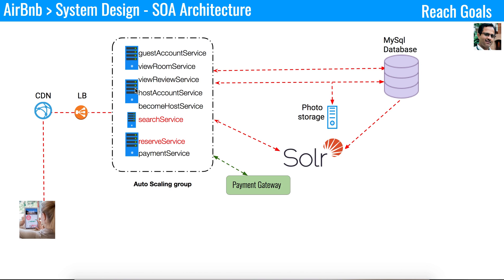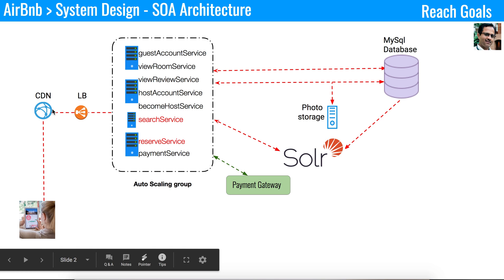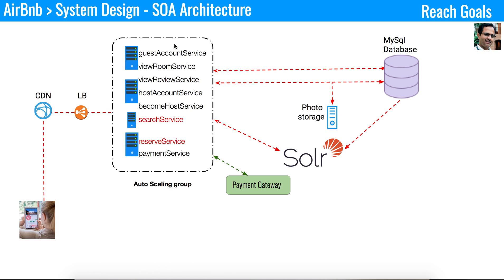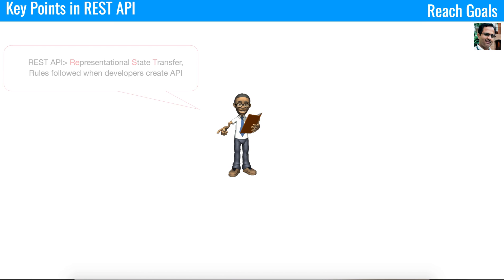You can find the URL of that system design in the description section. In the diagram, you have a client connecting to the CDN, which in turn connects to a load balancer, and finally connects to the RESTful web services deployed in a Docker container hosted in the EC2 environment. All communication between the client and server happens through the RESTful web services.